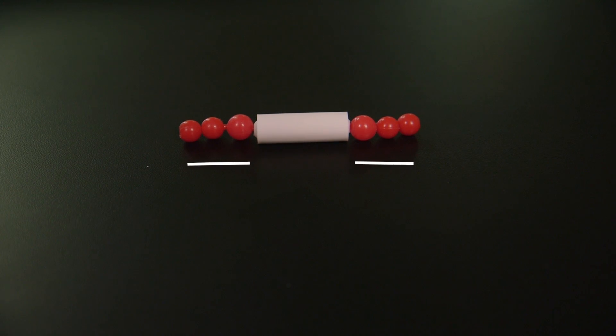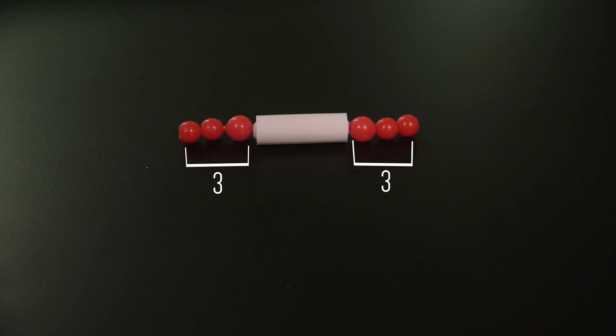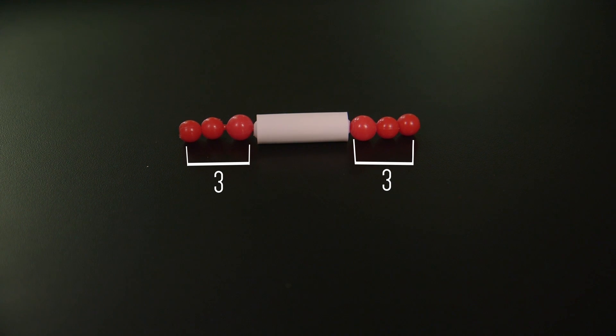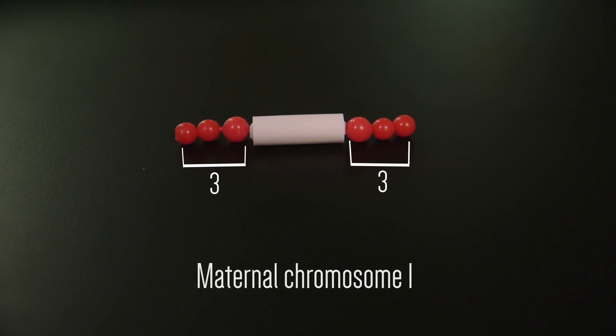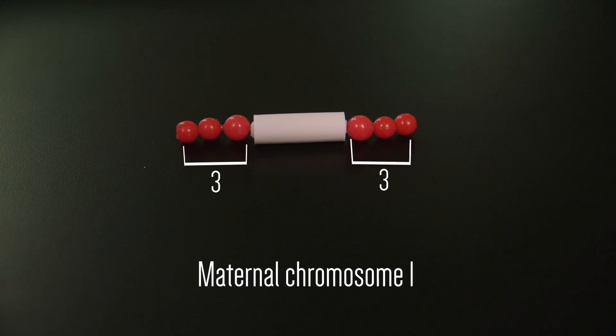We will keep the chromosome simple, with chromosome 1 having only three genes on either side of the centromere. In reality, there will be thousands of genes on each chromosome. We will use red beads for the maternal chromosomes. So here is chromosome 1, that the organism inherited from its maternal parent.